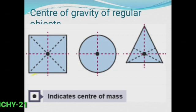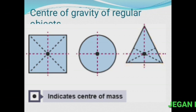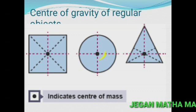For example, if the object is square in shape, the geometric center is at its center. For a circle, the geometric center is the central point. For a triangle, the geometric center is at this point. So the center of gravity of geometrically shaped objects lies at their geometric center.